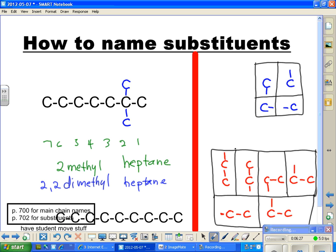Heptane is our longest chain. And number 1 is on the far right.